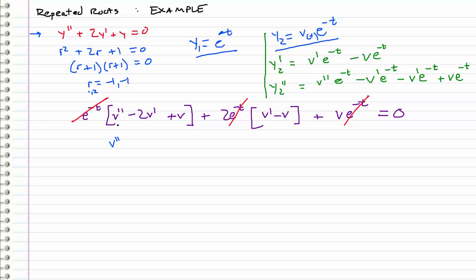Let's deal with the v double primes first. So we have v double prime. Now let's gather the v prime. So we have a minus 2 v prime, and then plus a 2 v prime. So those cancel out.